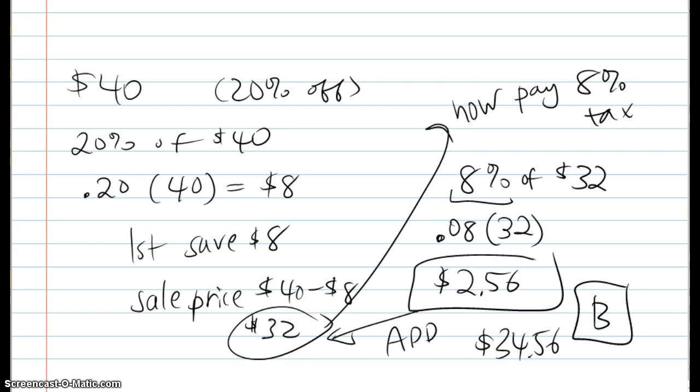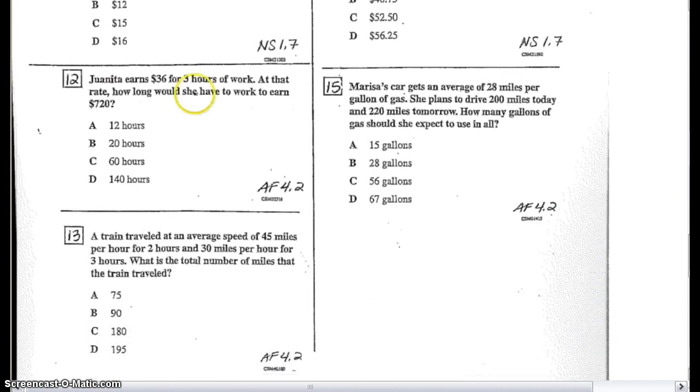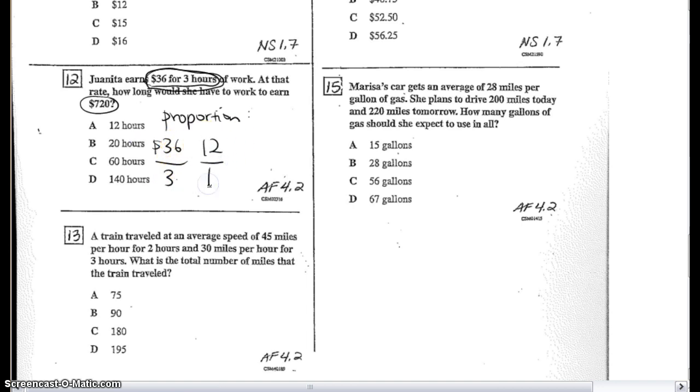I'm going to skip 11, I'm going to go to 12. On number 12, we see that Juanita, she is making $36 for 3 hours. Okay, and we want to know at that rate how long would she have to work to earn $720. So I can write a proportion. And if I do, I'm going to write two fractions. The first fraction that I can create would be that rate, the $36 for 3 hours, which would be 36 over 3. Actually, 36 over 3 is the same as 12 over 1. That basically means that she makes $12 for 1 hour. So that's hours in the denominator.